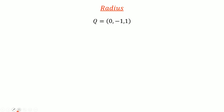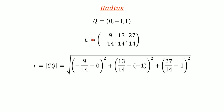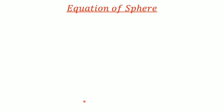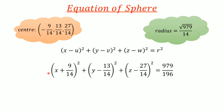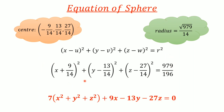Now using the center, we find the radius. We take any one of the four points — let's take Q(0, −1, 1) — and apply the distance formula between C and Q. We get the radius equal to √(979/14). Now we have both the center and the radius. Substituting into the center-radius form, we get the equation of the sphere. Opening the brackets gives us the required equation of the sphere.